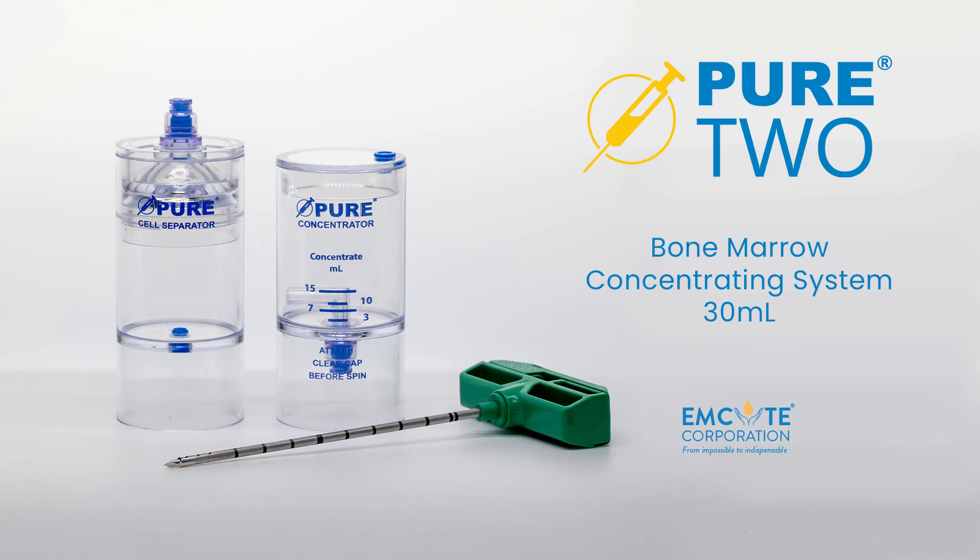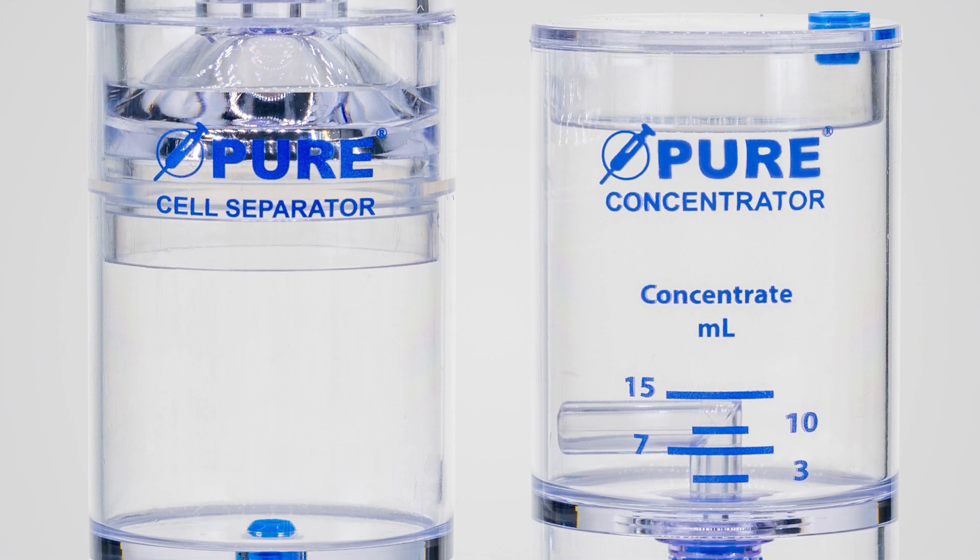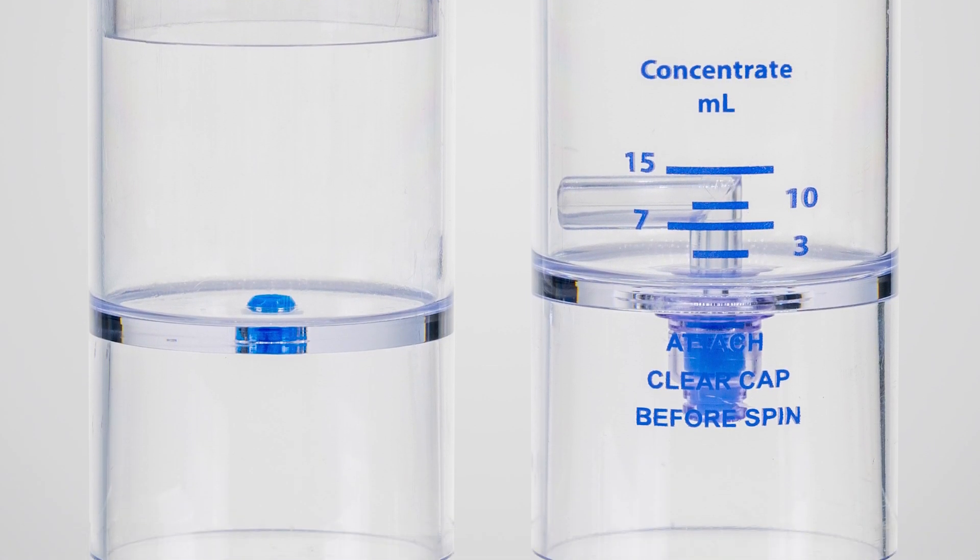Welcome to the Pure BMC2, the double-spin, double-device bone marrow concentrating system that carries the pride of performance legacy. In this video, we will process 30 milliliters of bone marrow concentrate.